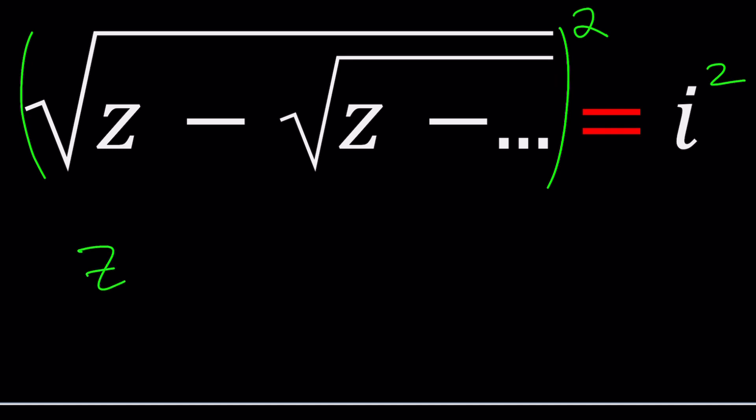The outer square root is going to disappear, leaving us with z minus the square root of z minus the square root of z minus. Allow me to write a little bit so that we can see the pattern. Sometimes if you don't see the pattern, keep expanding until you see the pattern. What is i squared? You should know this. It's negative 1.